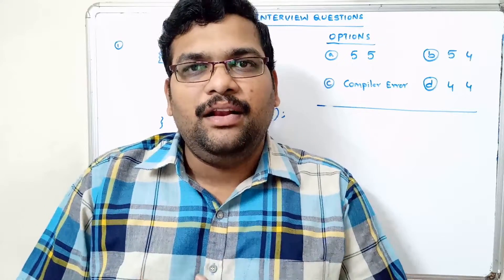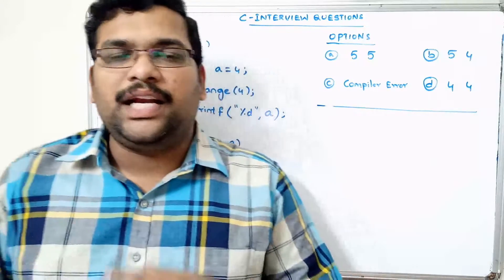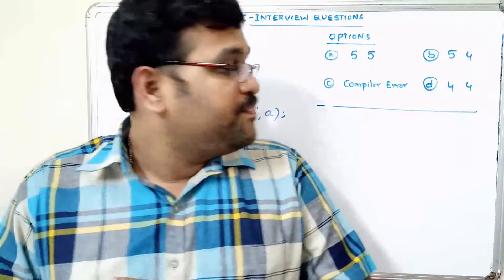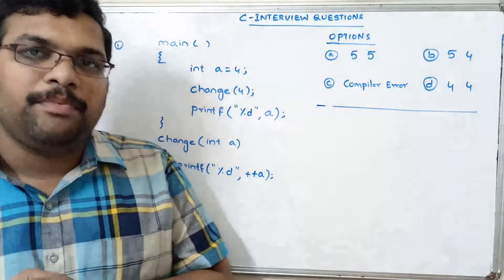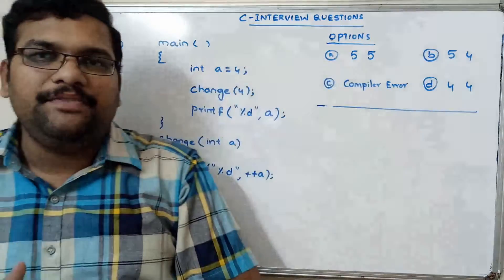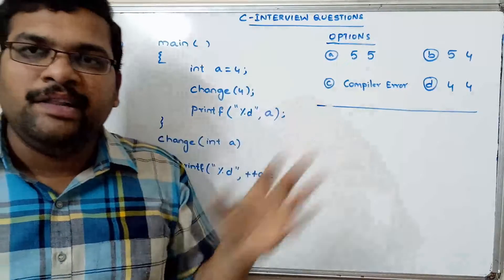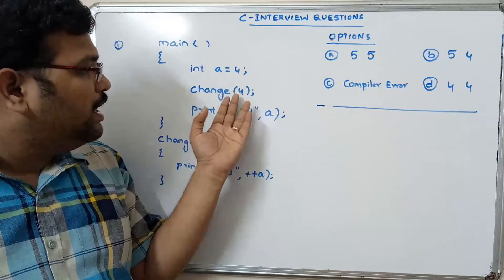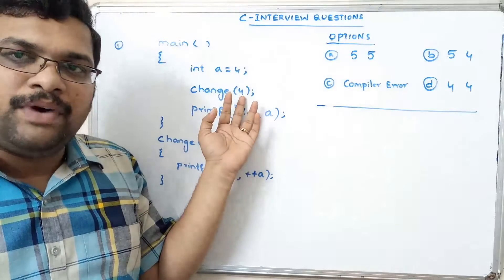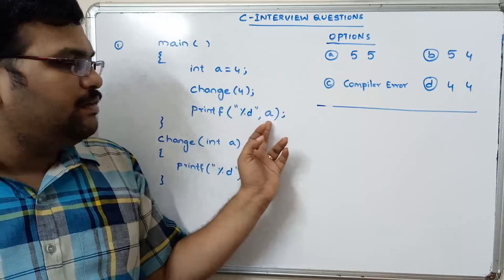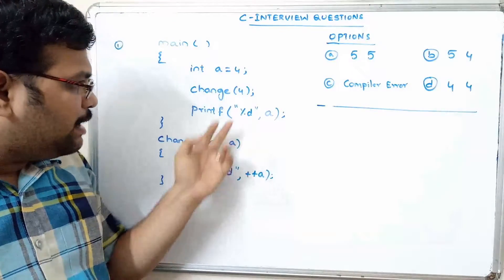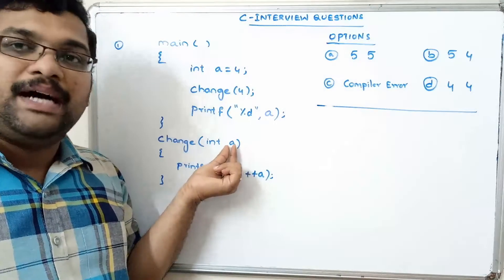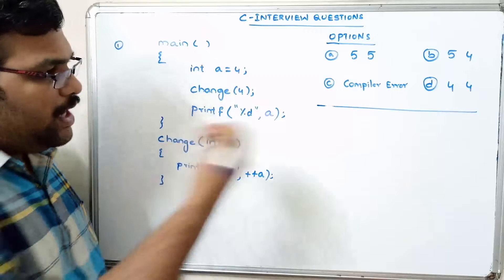Hello friends, welcome back to our channel. In today's session let us see a few more competitive exam questions on C programming. Here is a simple problem with options given, and we have to find the output. One variable is declared and initialized to 4, passed as a parameter to a function called 'change', and we are printing the value. The function definition prints the incremented value of the passed parameter.